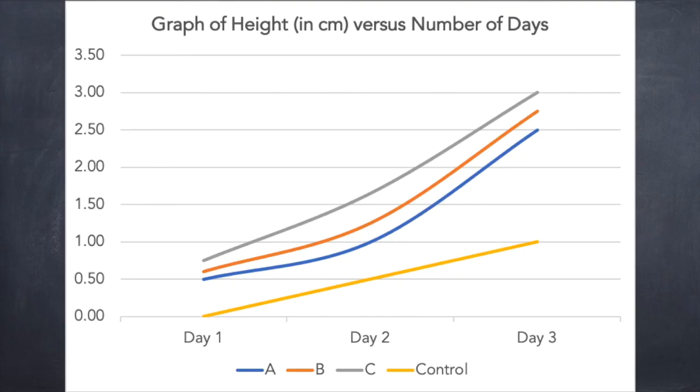Now let's graph the data from the table. Notice that the corresponding or dependent variable takes the y-axis while the manipulated or independent variable takes the x-axis. From the graph you can easily see which set up reaches the tallest height that is set up C while the shortest height is the control.